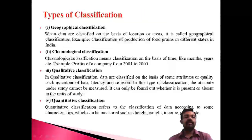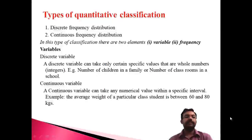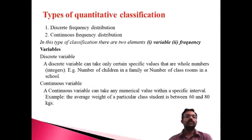Quantitative classification means classifying data according to some measured element like height, weight, or income — that is known as quantitative classification. Quantitative classification can be further divided into two types: discrete frequency distribution and continuous frequency distribution. Discrete means without a class interval and with corresponding frequency; continuous means with a class interval such as 10 to 15 and corresponding frequency.